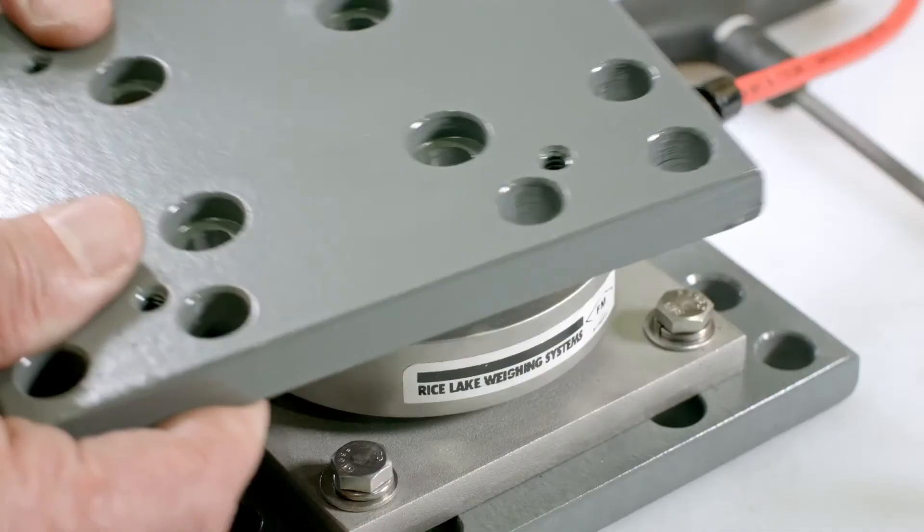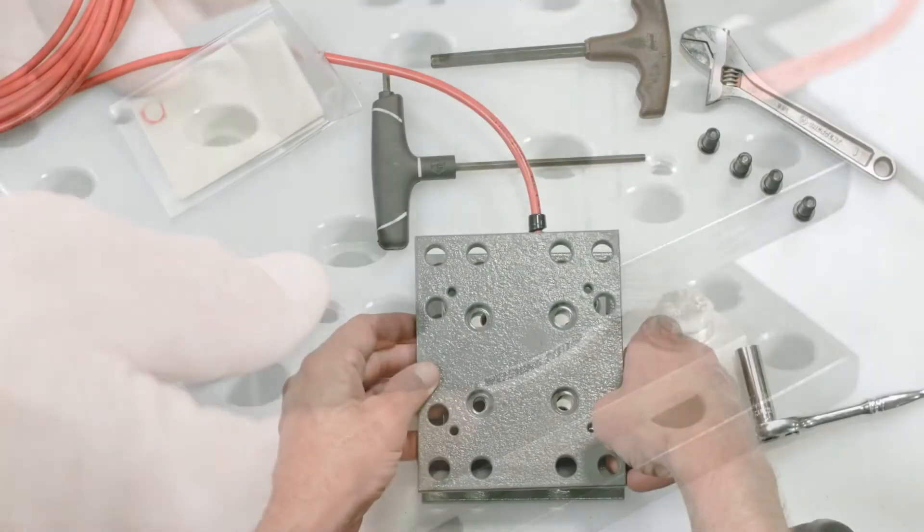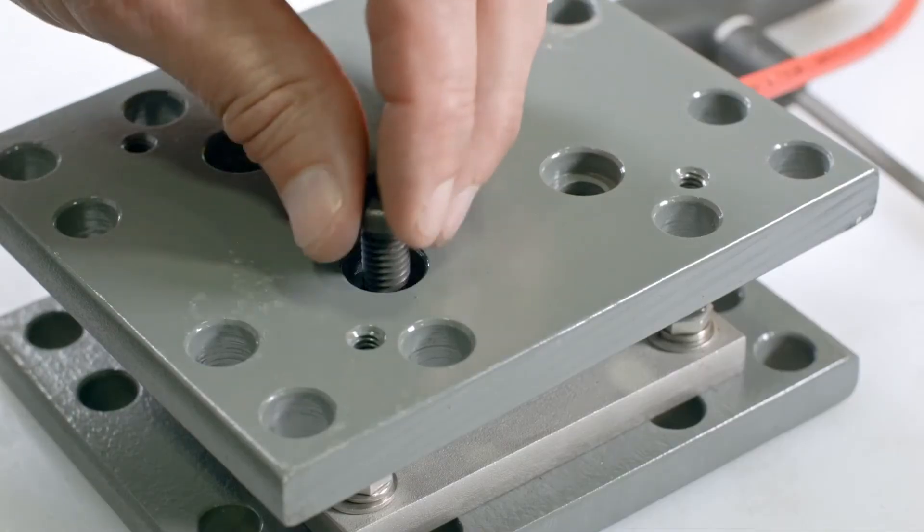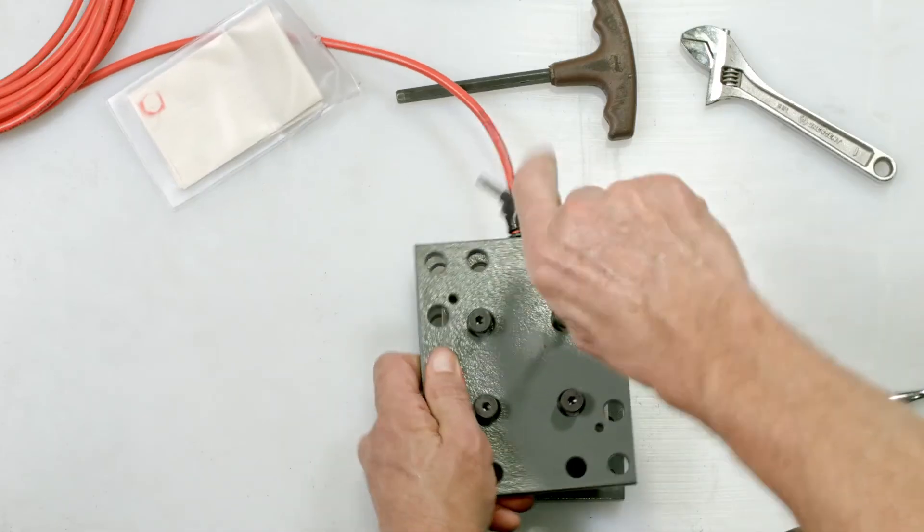Place the remaining adapter plate on top of the cell with the countersunk side up. Align holes with the cell. Use the allen head bolts to connect and tighten together.